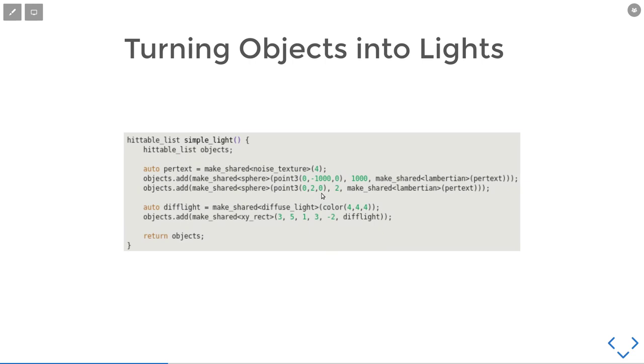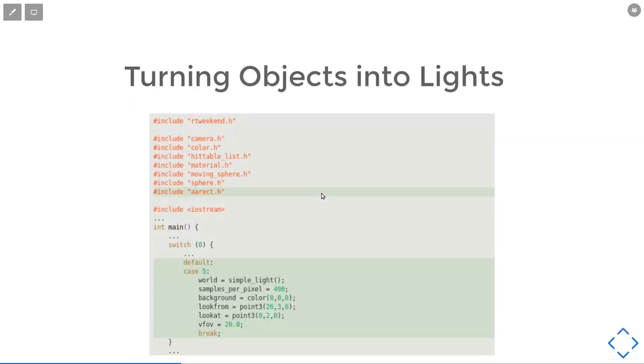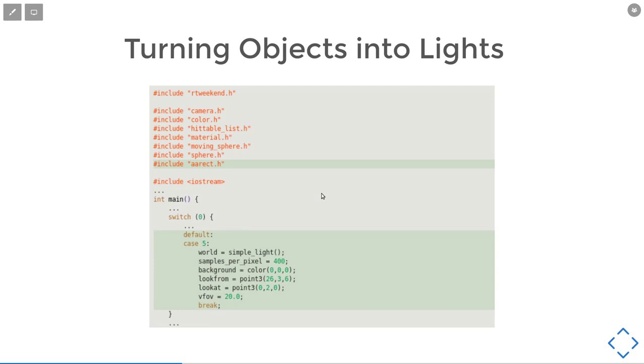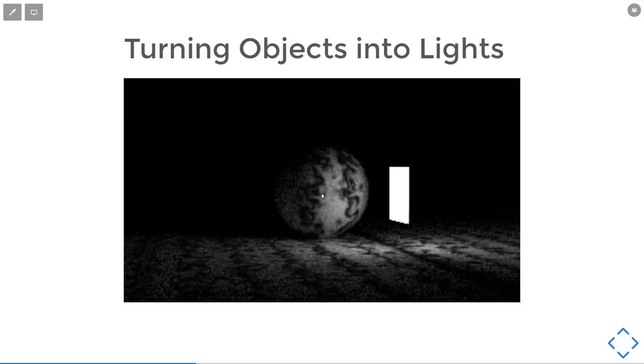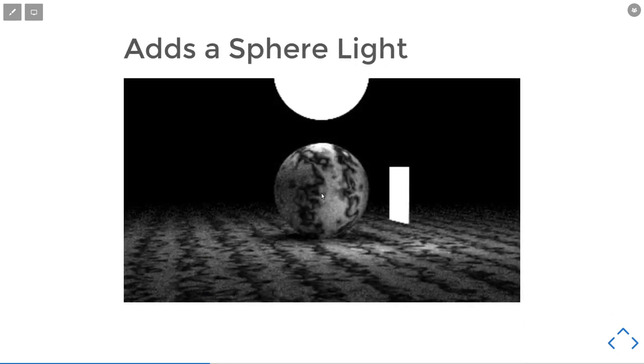Next, we need to turn this rectangle into a light. What we do is apply some diffuse light material to the rectangle. We add it to the previous scene, and we get this picture. We can make different shapes into lights. For example, we can also make a sphere into a light and have this thing. Basically, we can turn arbitrary shapes into area lights this way.